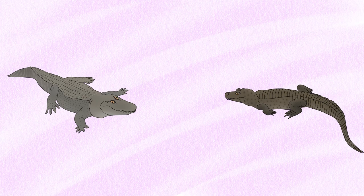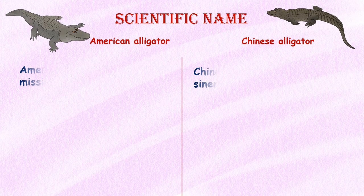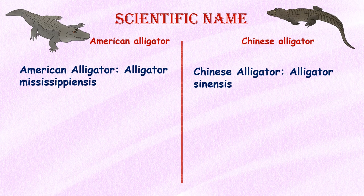The American alligator and the Chinese alligator are two species of alligators found in different parts of the world. In this video, we will talk about the basic differences between the American alligator and the Chinese alligator. The scientific name of the American alligator is Alligator mississippiensis, while the Chinese alligator is Alligator sinensis.